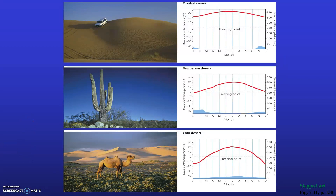Photos illustrate the landscape of each desert type: the top photo shows a tropical desert in the United Arab Emirates with a sport utility vehicle; the middle picture shows a temperate desert in Arizona with a saguaro cactus, a predominant species in that ecosystem; and the bottom picture shows the Gobi desert in Mongolia, a cold desert where Bactrian camels live.